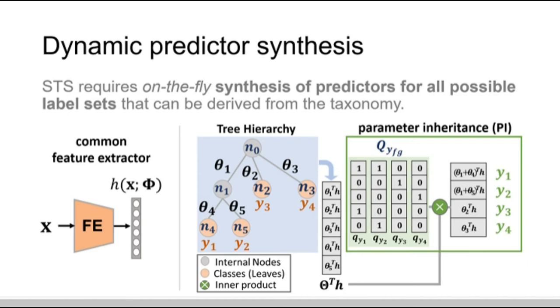The parameter of each predictor is then constructed with the parameter inheritance mechanism. For example, Y1 and Y2 share the same ancestor, N1, which has parameter theta1. So, the parameter for Y1 is theta1 plus theta4 and the parameter for Y2 is theta1 plus theta5. These parameter sharing mechanisms enable the knowledge transfer from head classes to tail classes.